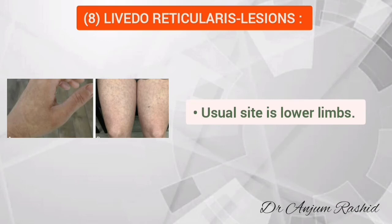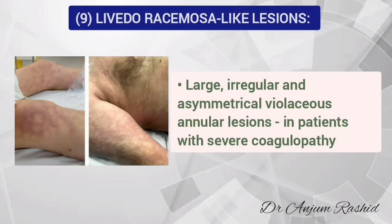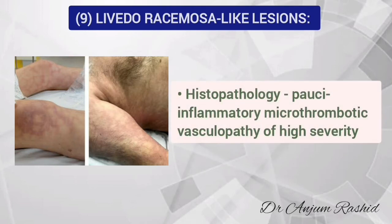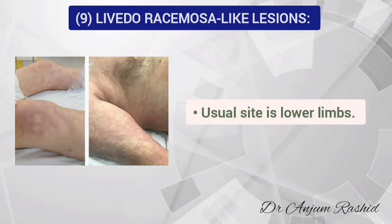A similar type of lesion found in some COVID patients is livedo reticularis-like lesion. These are large, irregular, asymmetrical, and violaceous annular lesions typically found in patients with severe coagulopathy. On histopathology there is post-inflammatory microthrombotic vasculopathy of high severity. This rash also usually occurs on the lower limbs.